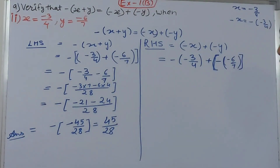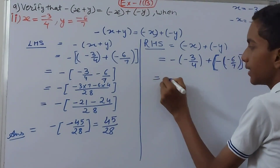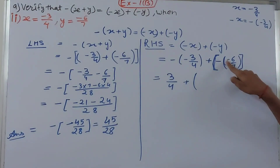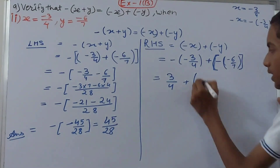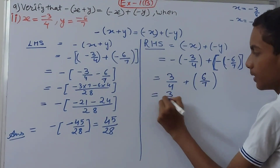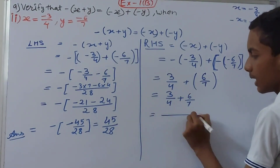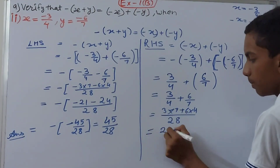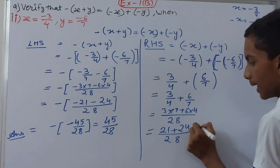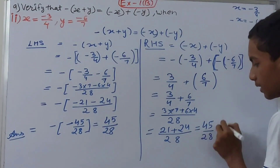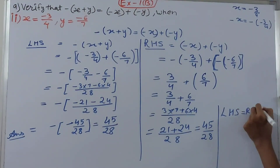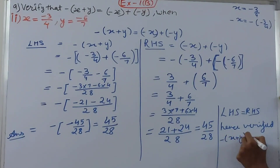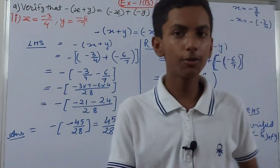So the right hand side is minus of (minus 3/4) plus minus of (minus 6/7). Opening brackets: minus times minus is plus, so we get 3/4 plus 6/7. Finding LCM 28: 3 into 7 is 21, plus 6 into 4 is 24, giving 45/28. Left hand side equals right hand side, hence verified: minus (x + y) = minus x + minus y.